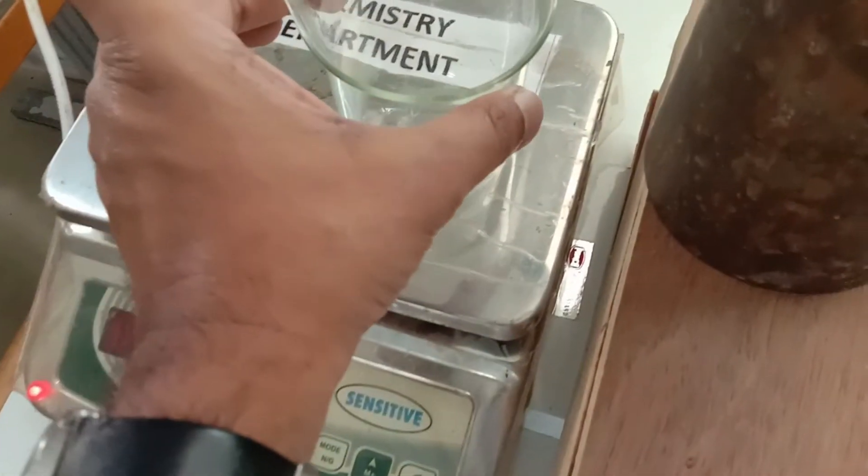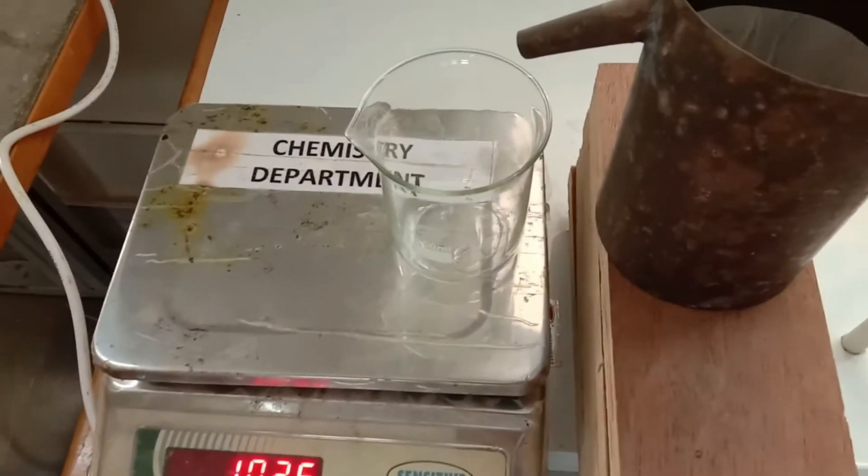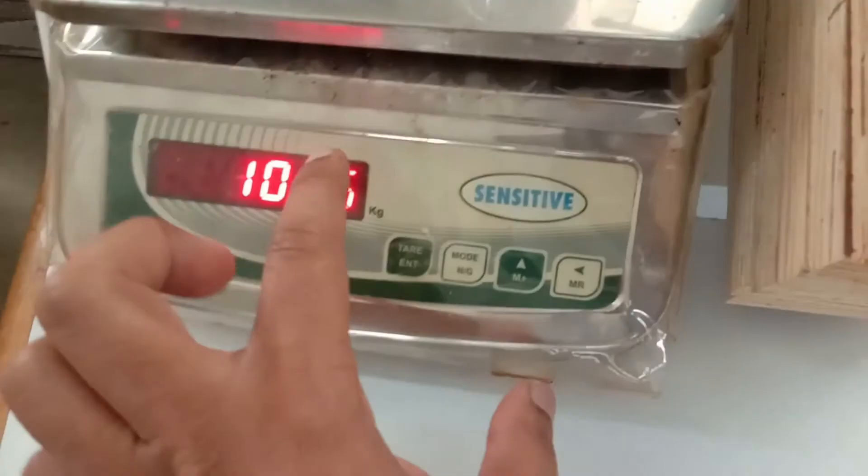Again, I am going to place this beaker on the weighing machine and set the weighing machine to zero.